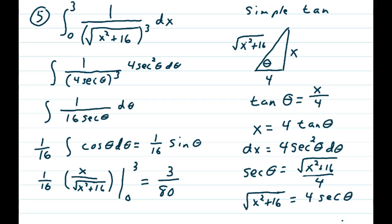Using your trig identity, 1/sec is the same as cosine. So I take the 1/16 out front: integral of cos θ dθ. Very simple rule: 1/16 sin θ.